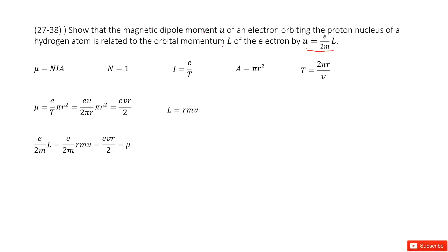Magnetic dipole moment from definition is NIA, right? N is how many turns, I is current on this loop, A is cross-sectional area. As you can see, the N is 1 because it's just one turn. Then we look at the I, the current.